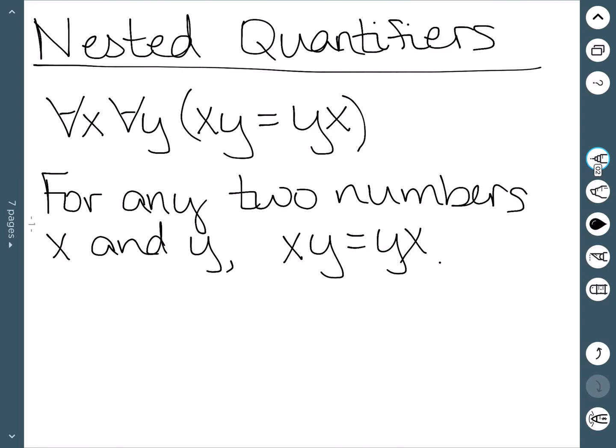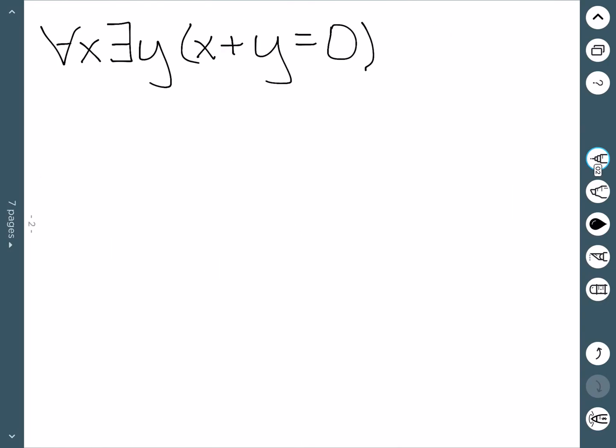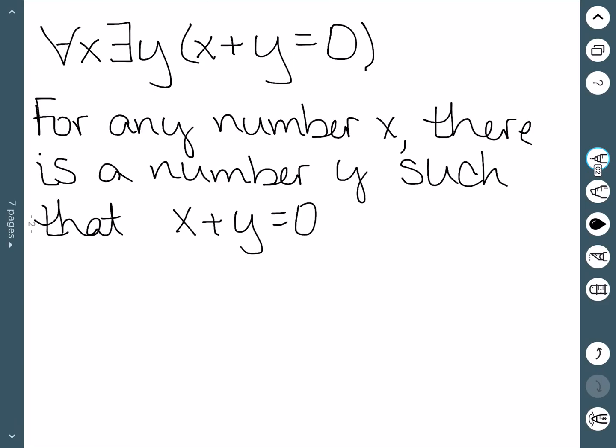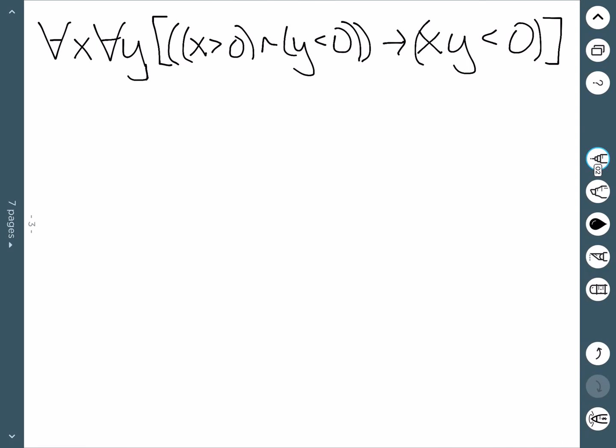We'll look at a few more examples. This one — for any number x, there is a number y such that x plus y is equal to zero. Our last example said we could pick any two numbers and it would work. This one says we can pick any number for x and then there should be a number y that also works. Now let's look at translating this one to English: for all x and for all y, x greater than zero and y less than zero implies xy is less than zero.